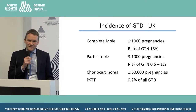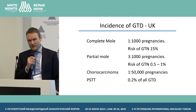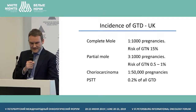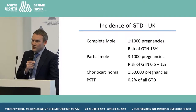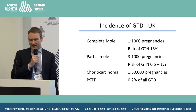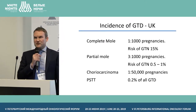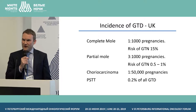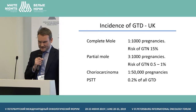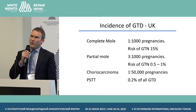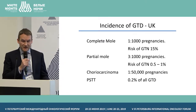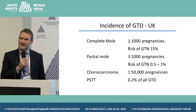In the UK, we're fortunate to have a national register. Since 1973, all patients with a mole of pregnancy are registered with one of three screening centres. The incidence of complete mole in the UK is thought to be one in 1,000 pregnancies, with a risk of transformation to gestational trophoblastic neoplasia of about 15%. The incidence of partial mole is slightly higher at three in 1,000 pregnancies, but with a much lower risk of malignant transformation, thought to be less than 1%. Choriocarcinoma is about one in 50,000 pregnancies, and placental site trophoblastic tumour is less than 0.5% of all gestational trophoblastic disease.